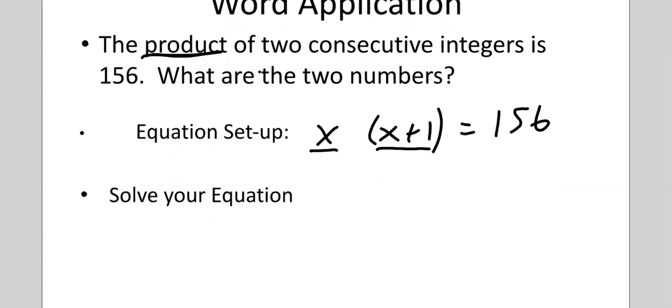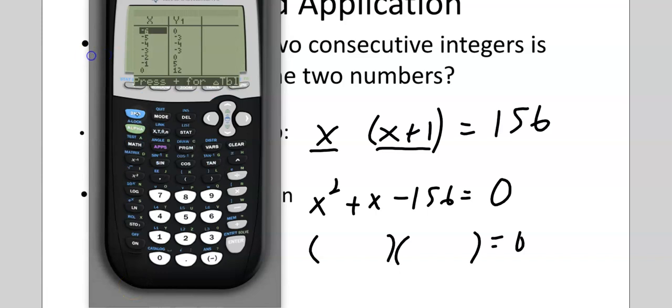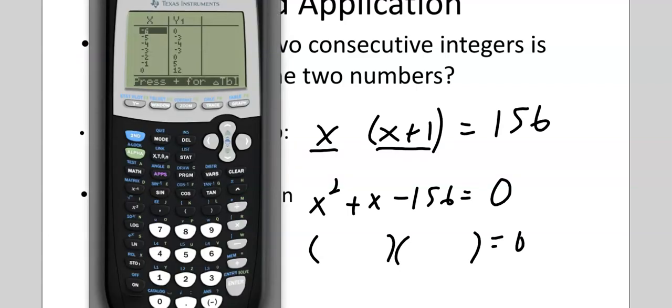Say this number times this number, because the product, equals 156. And then we just solve. So now we're going to distribute the X and get X squared plus X. I'm going to move the 156 over. And I'm going to need to factor. Now, it's going to take a little bit of time to guess and check. So I'm going to teach you a little trick here.